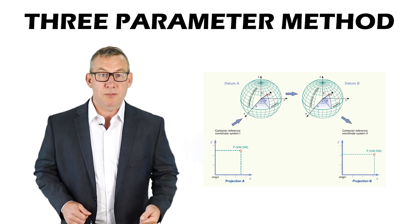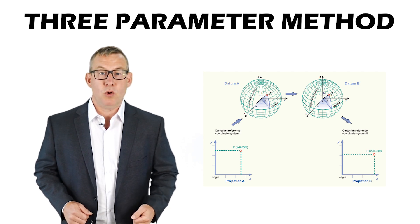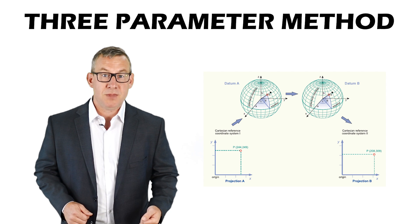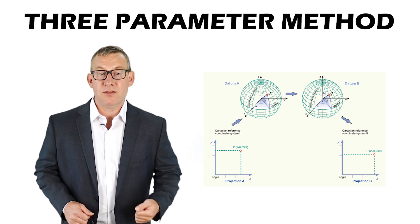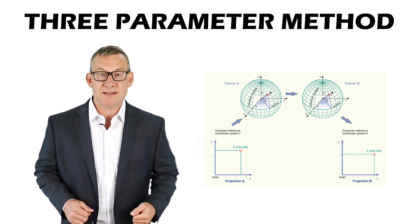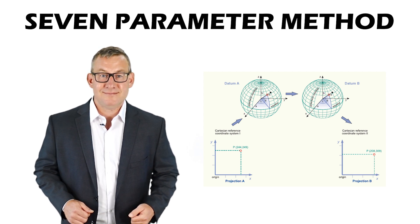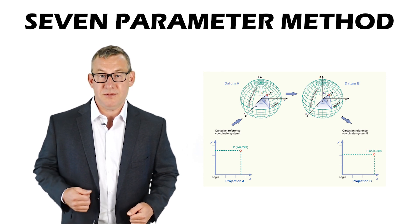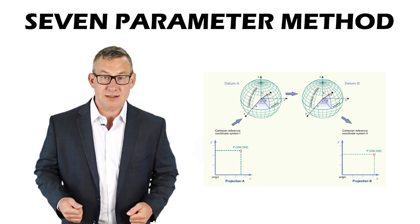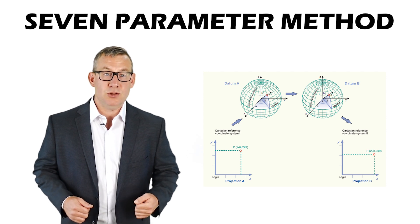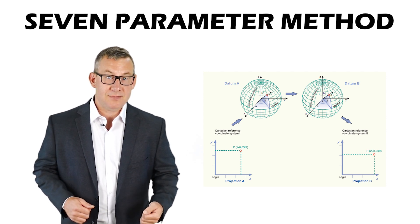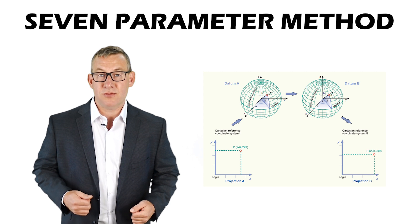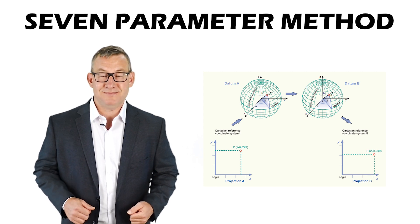The 3-parameter method performs three linear shifts along each axis of a 3D Cartesian coordinate system. The 7-parameter method performs three linear shifts along each axis, three angular rotations, and a scale factor in a 3D Cartesian coordinate system.